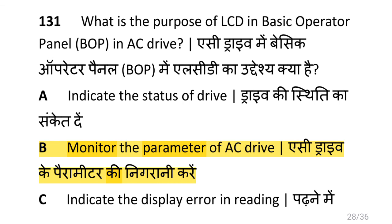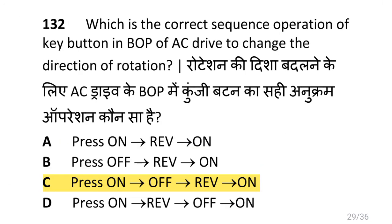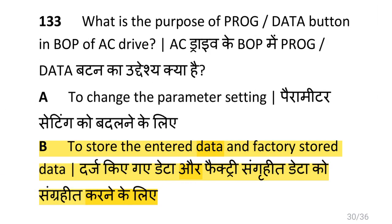What is the purpose of LCD in basic operator panel BOP in AC drives? That is to monitor the parameters of AC drives. Which is the correct sequence of operation of key buttons in BOP of AC drives to change the direction of rotation? That is press on, off, reverse, then on. What is the purpose of program/data button in BOP of AC drives? That is to store the interior data and factory stored data.